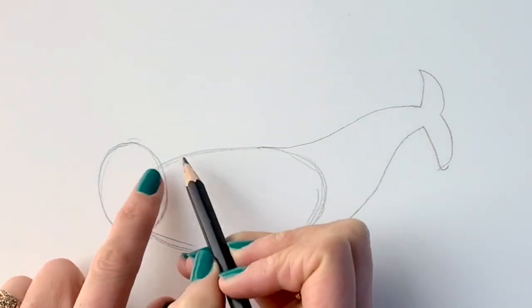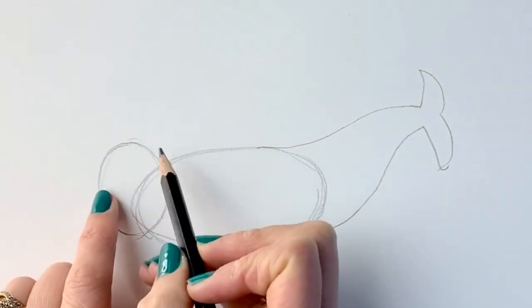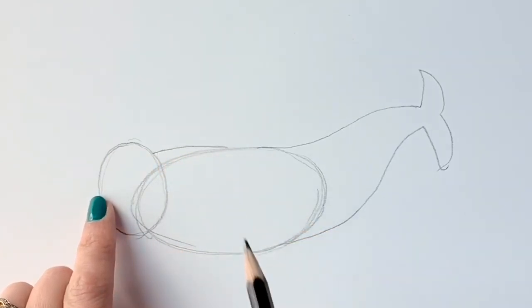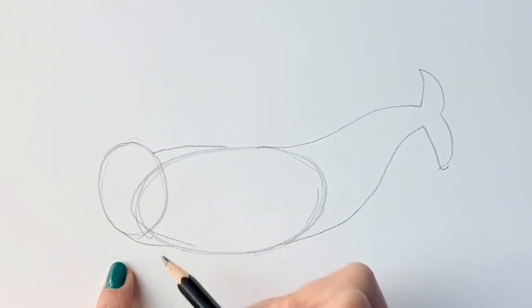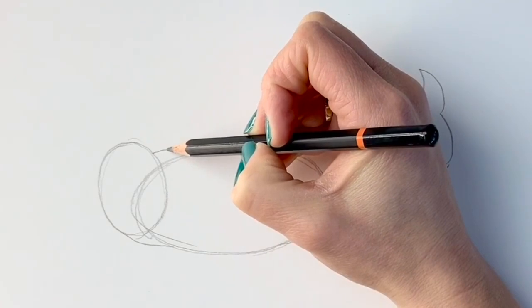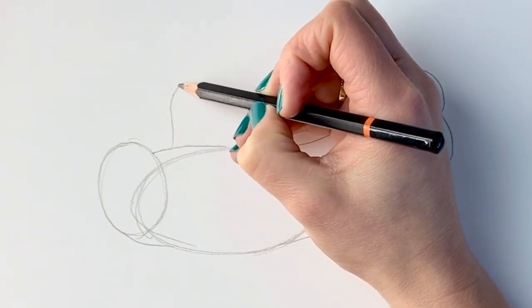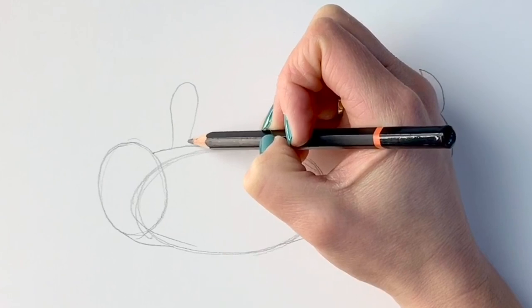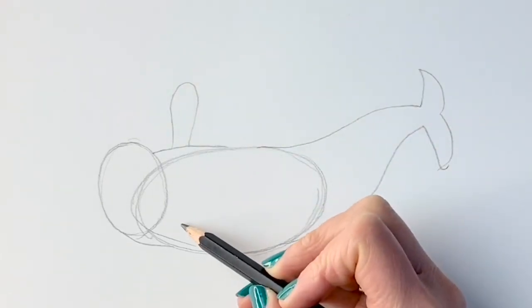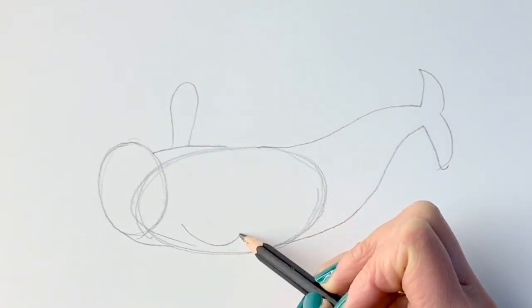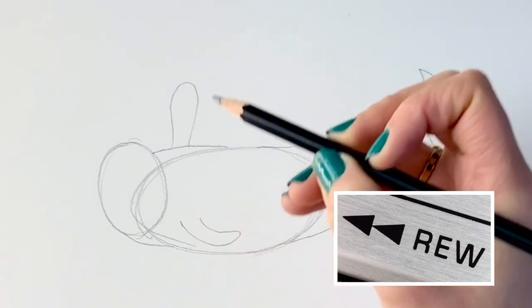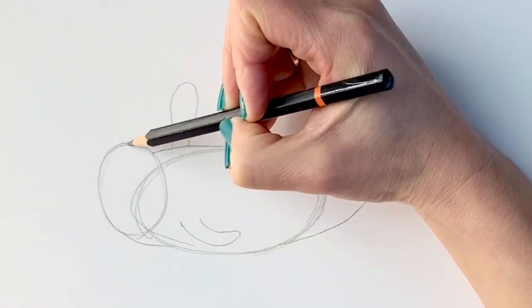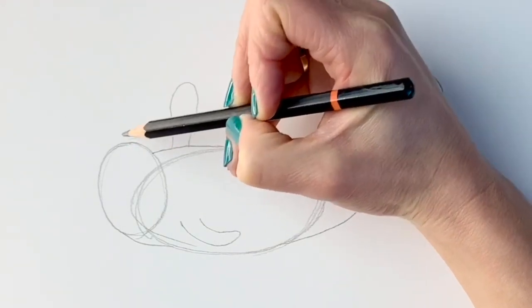Now, I'm going to join up this oval to that oval just with a simple line. I'm going to do the same just down here. Now, I'm going to add a fin coming out from here, and then another fin just coming round here. Remember, if I go too quickly, just hit pause and rewind. It's much better that you don't miss anything.